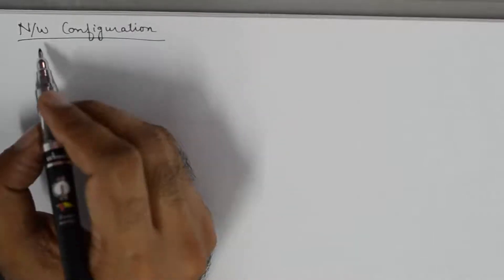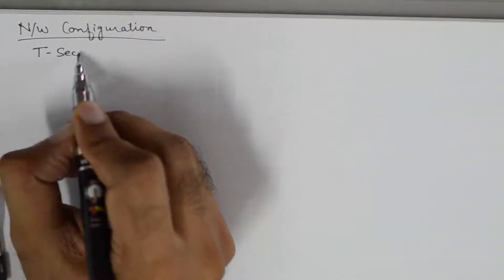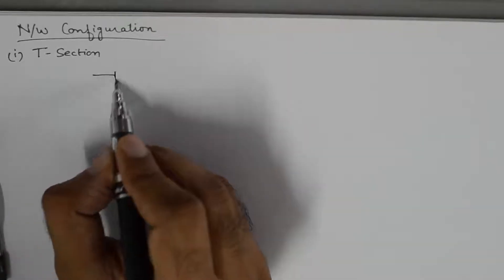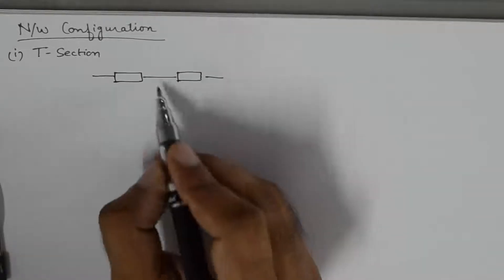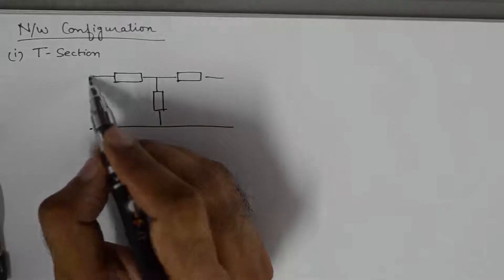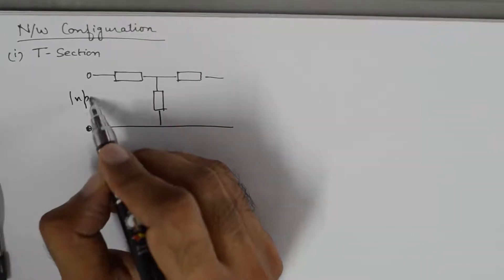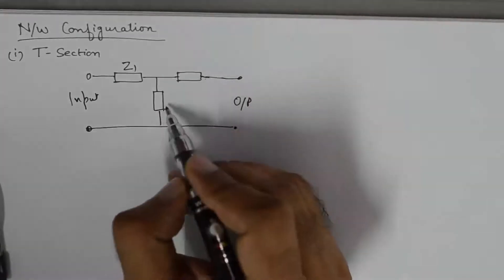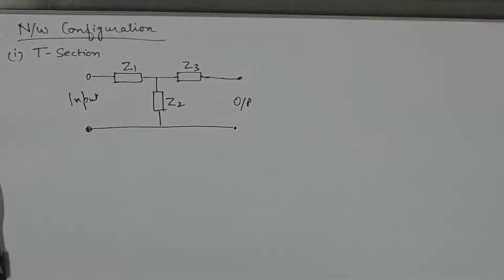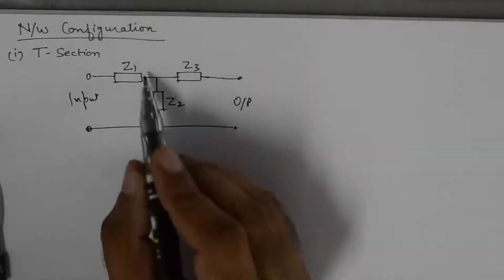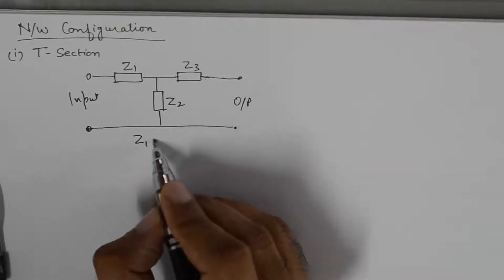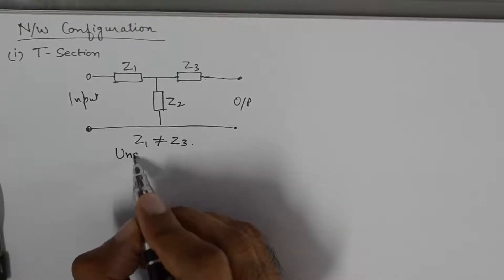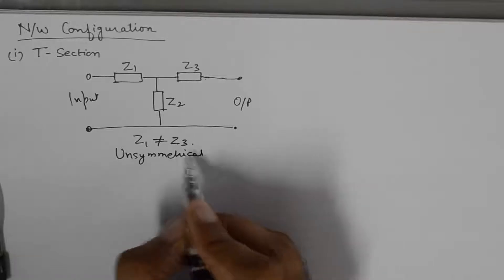The T-type network configuration is also known as a T-section configuration. This is one such configuration where we study two-port networks — we'll have an input port and an output port. The configuration of the network is such that it forms the shape of a T, with resistances connected accordingly. If in such a network Z1 is not equivalent to Z3, this is known as an unsymmetrical T section.